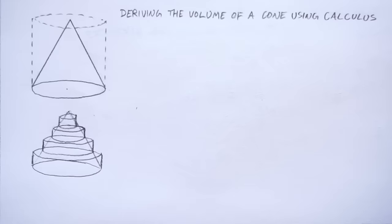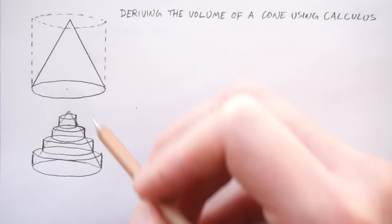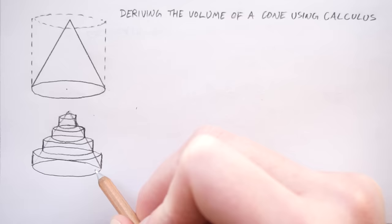So here's the procedure. We're going to approximate the volume of our cone using a whole load of discs. These are basically cylinders and we already know how to calculate the volume of a cylinder because it's a simpler shape. It's basically the base times the height.